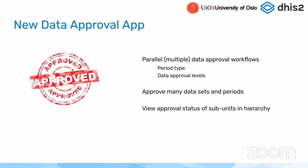A data approval workflow also has multiple levels, and levels largely follow the org unit levels. That means we can now avoid having to approve at all levels in the hierarchy — instead approving only at selected levels. The levels can also be different for every data approval workflow, so you can have different levels per workflow and run them in parallel.